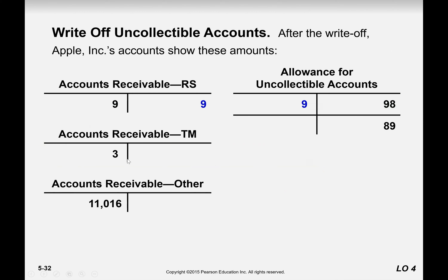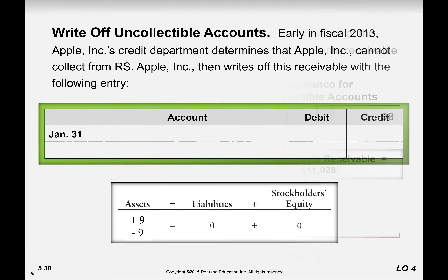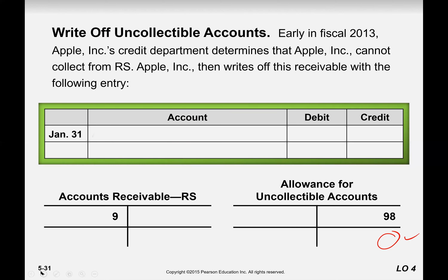In our subsidiary ledger we see this balance. Our total accounts receivable is now at level 019. The allowance is going to be given to you and you need to calculate it — either using the percentage of sale method or the aging method. You will be given the amount that indicates how much is not going to be paid, and then you make the entry.